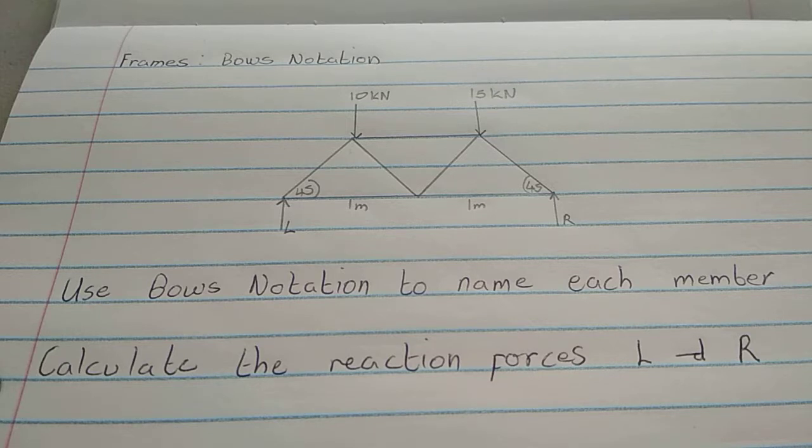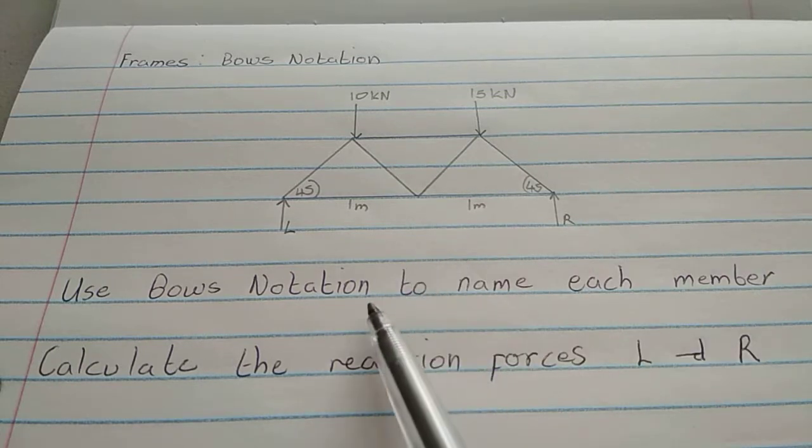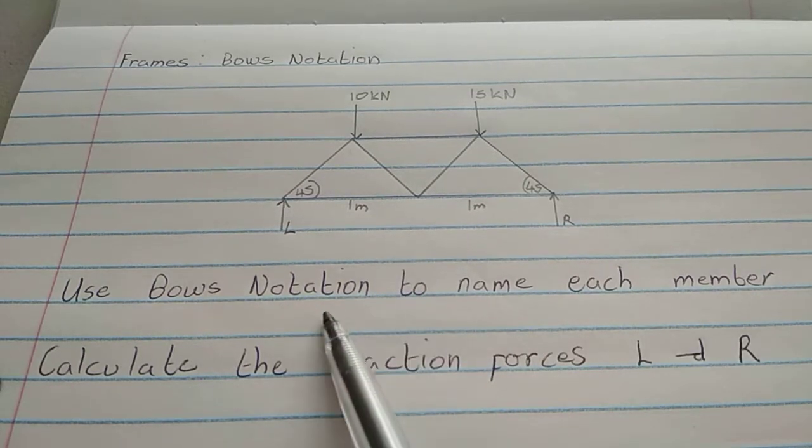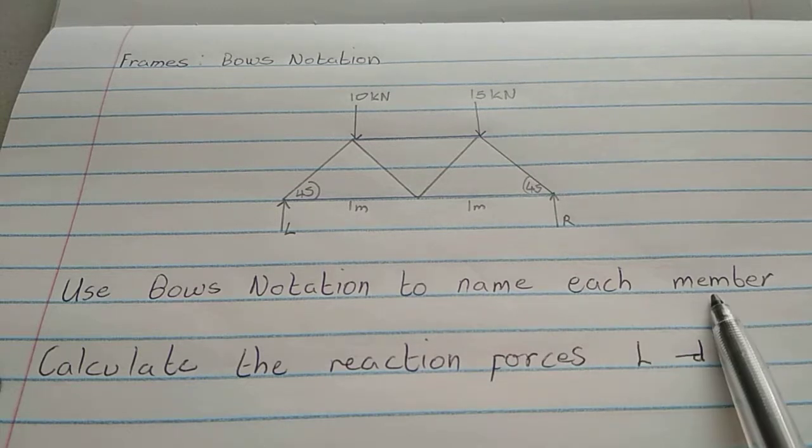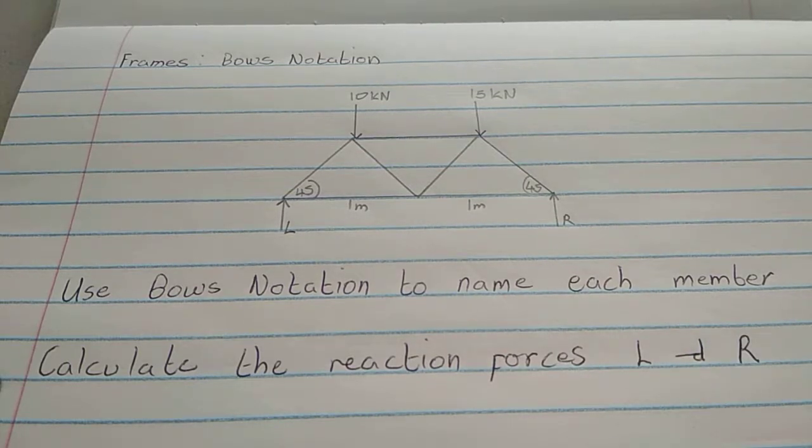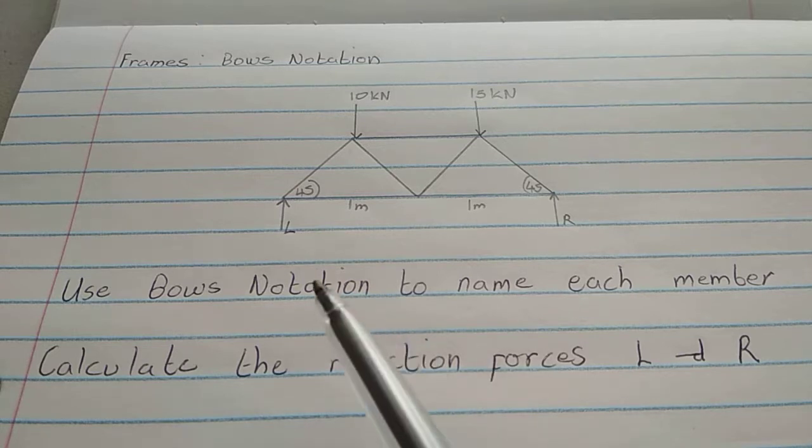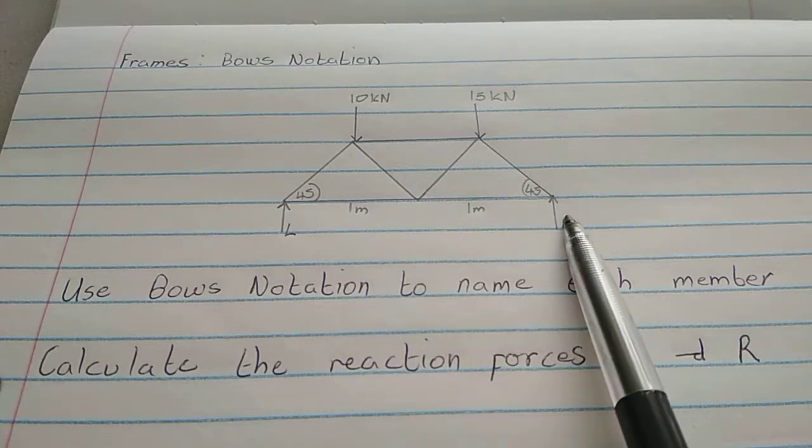We're going to start with the Bow's notation. Bow's notation is just a way of naming each member in the frame. The first question is, use Bow's notation to name each member of the frame. And then after that, we are going to calculate the reaction forces L and R. There's L over there and R over there.